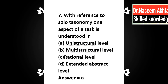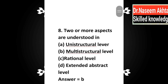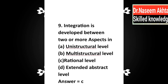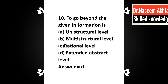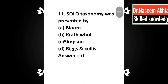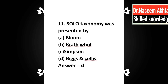Question 8: Two or more aspects are understood in — a) unistructural level, b) multi-structural level, c) rational level, d) extended abstract level. Correct answer is B: multi-structural level. Question 9: Integration is developed between two or more aspects in — a) unistructural, b) multi-structural, c) rational level, d) extended abstract level. Correct answer is C: rational level. Question 10: To go beyond the given information is — d) extended abstract level. Question 11: SOLO taxonomy was presented by — a) Bloom, b) Krathwohl, c) Simpson, d) Biggs and Collis. Correct answer is D: Biggs and Collis.